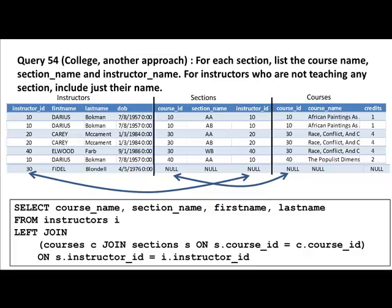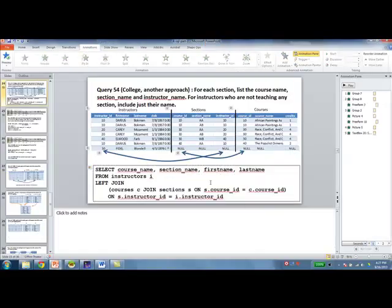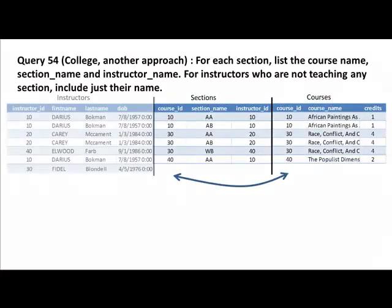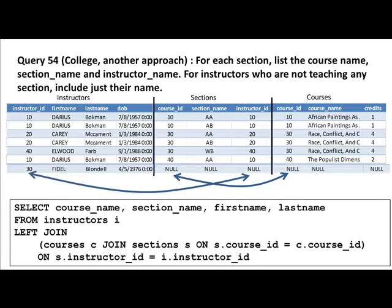That is, we are saying here — slightly different syntax from before. So look at this: select course name, section name, first name, last name. We have instructors I left join. But this time we put parentheses around the join of courses and sections. So we are not just saying instructors I left join courses or left join sections — no. Instructors I left join to the result of the join of sections and courses. That's what the parenthesis forces.